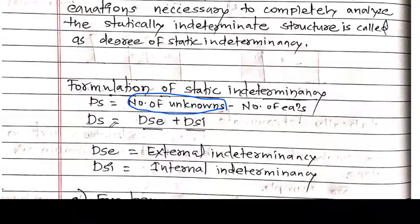DS = DSE + DSI. DSI is the degree of static indeterminacy for internal forces, and DSE is the degree of static indeterminacy for external forces. DSE = R minus 3 (reactions minus equations available). DSI = 3M minus (3J minus 3), where M is number of members and J is number of joints.